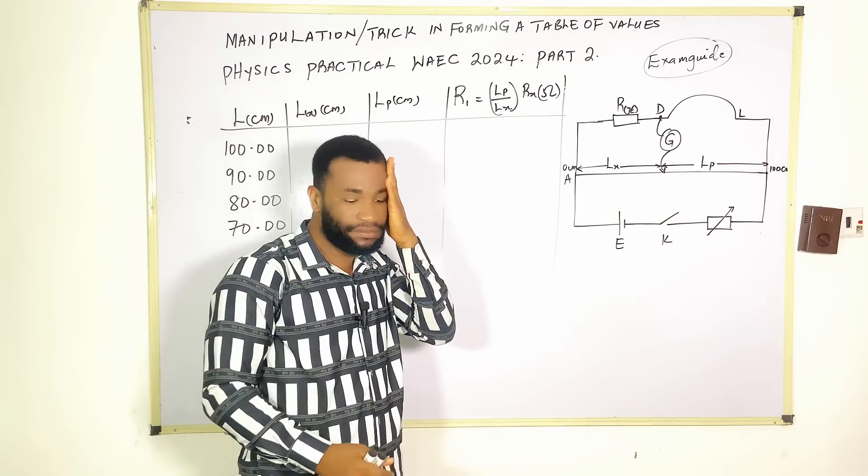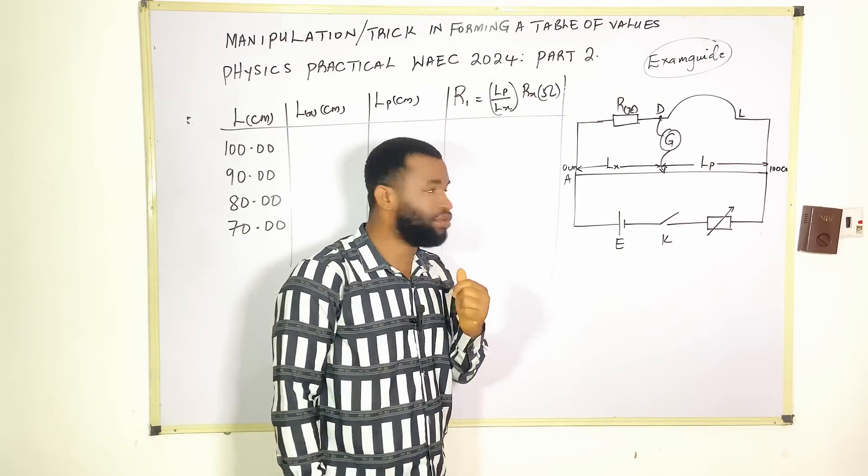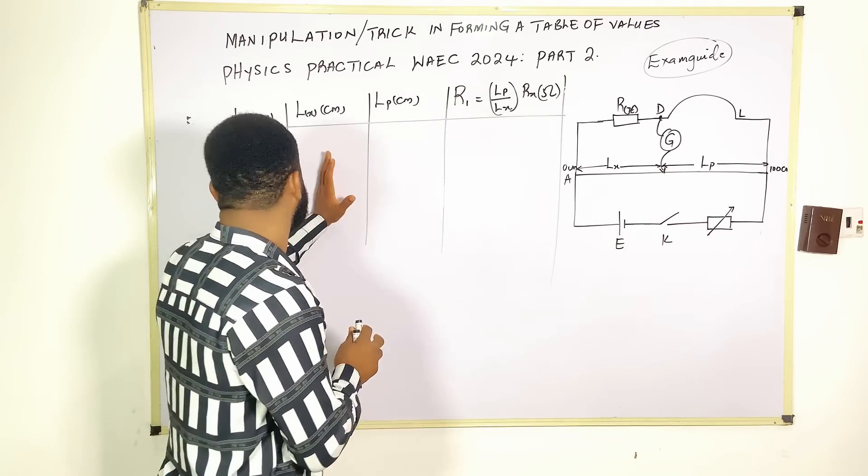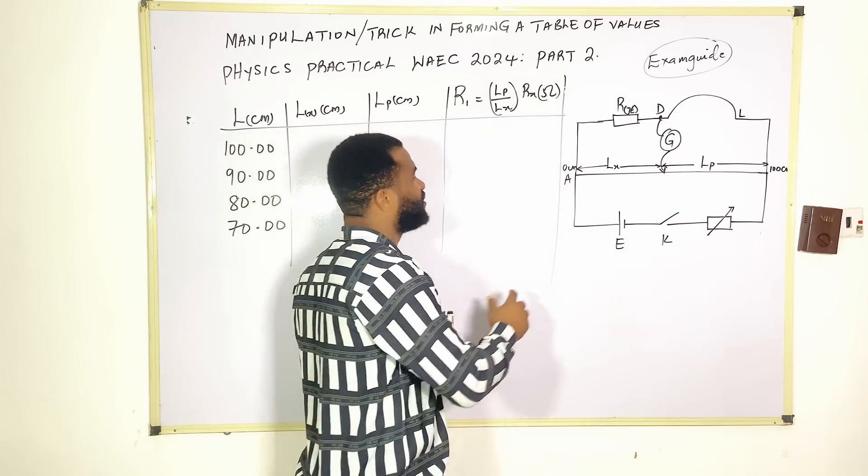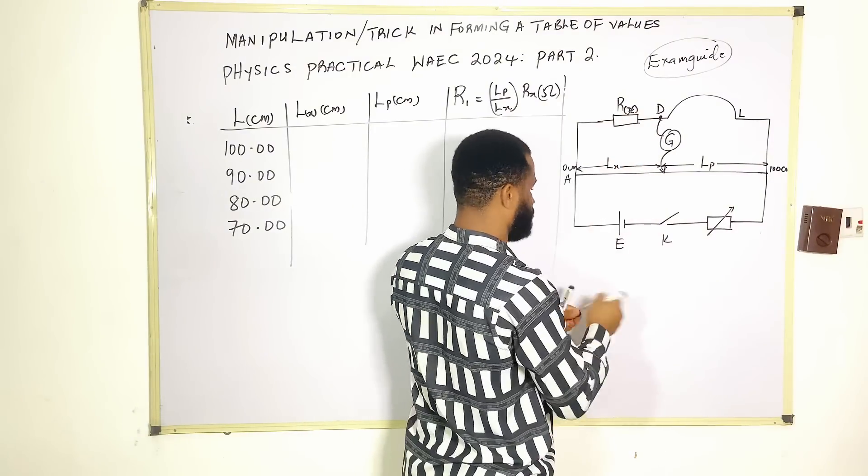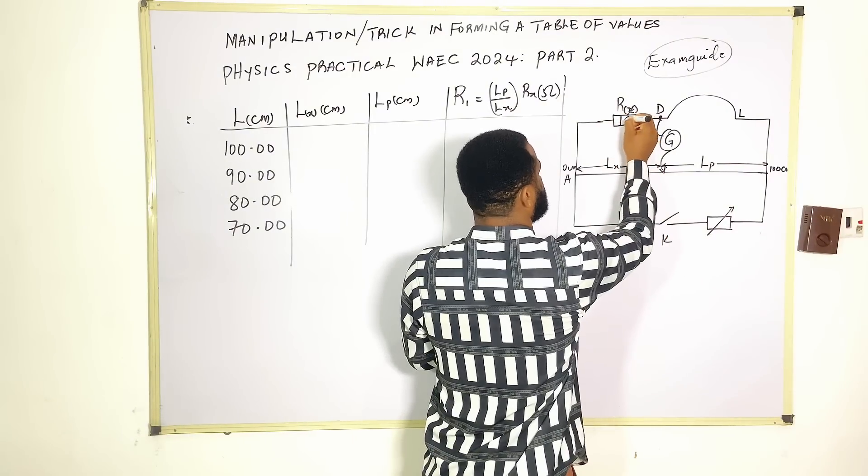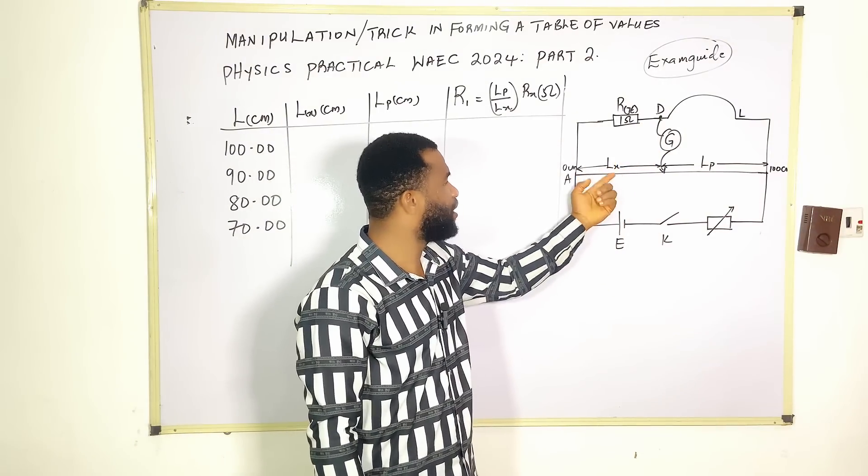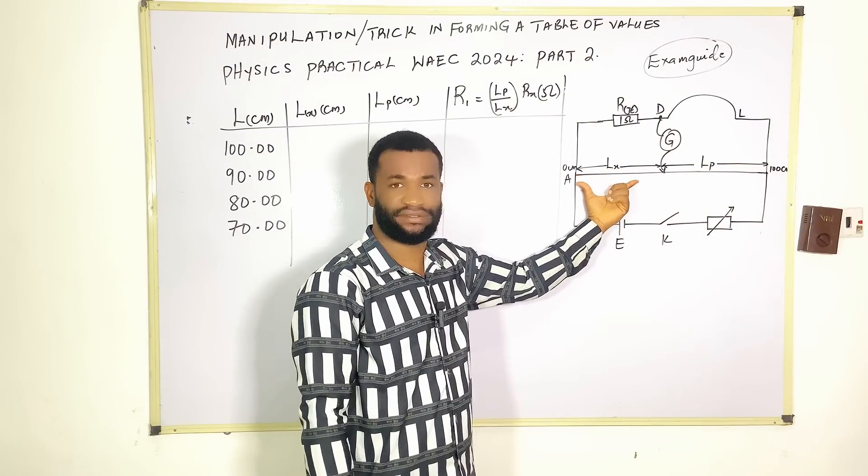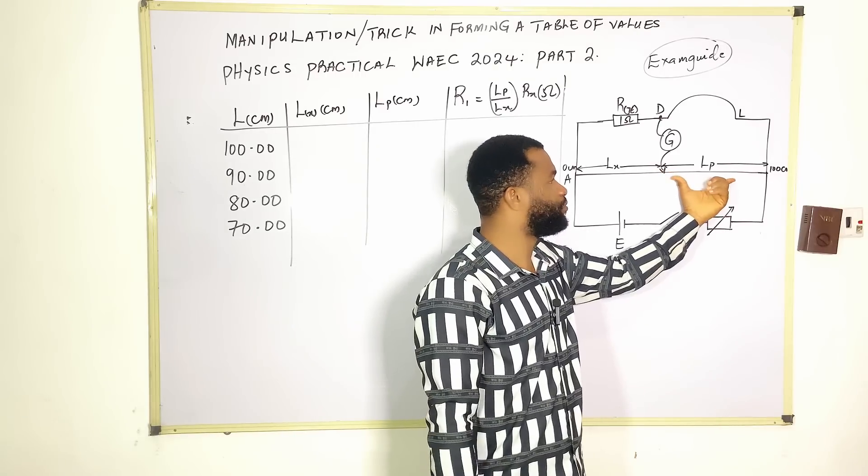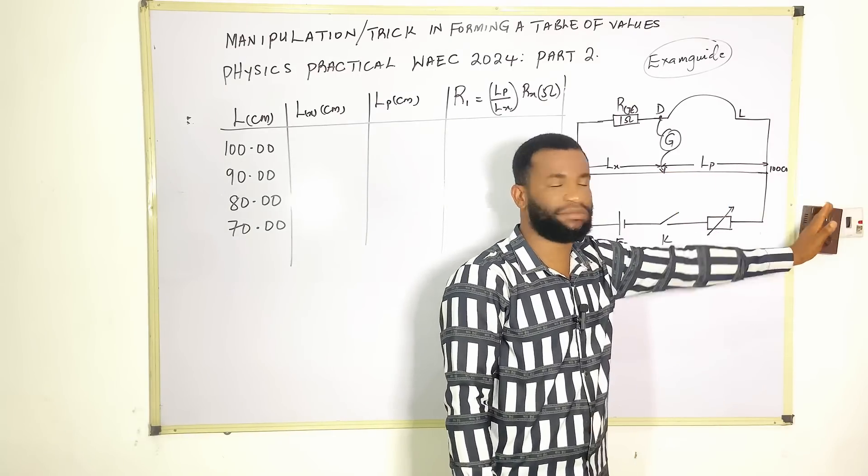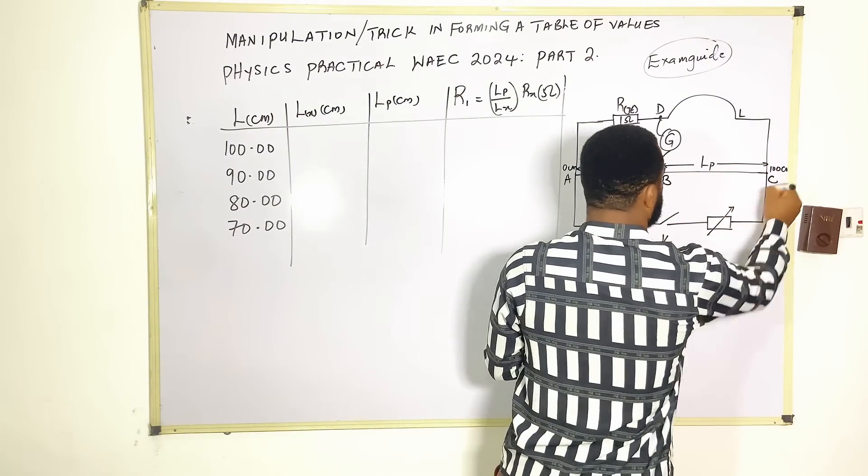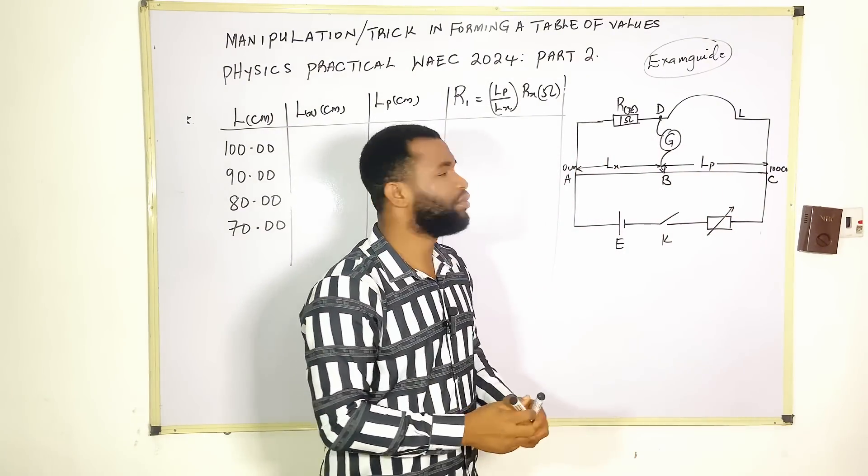Without wasting much time, let's go. If you look at the table of values, you see that this rx is 1 ohm. Now on this 1 ohm, we have lx and we have lp in the other part of the experiment. This is going to be point B and this is point C.